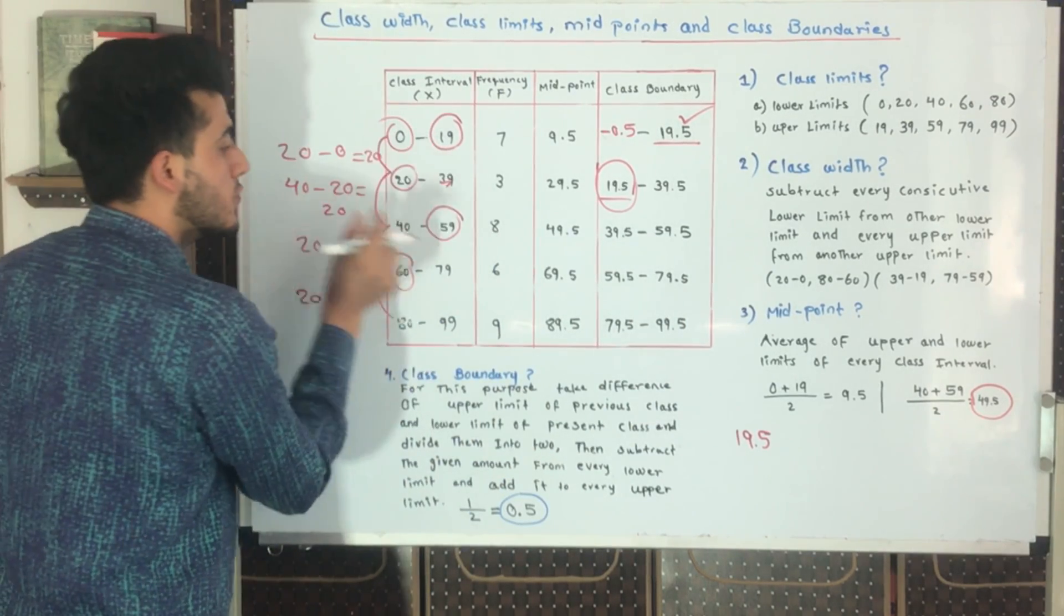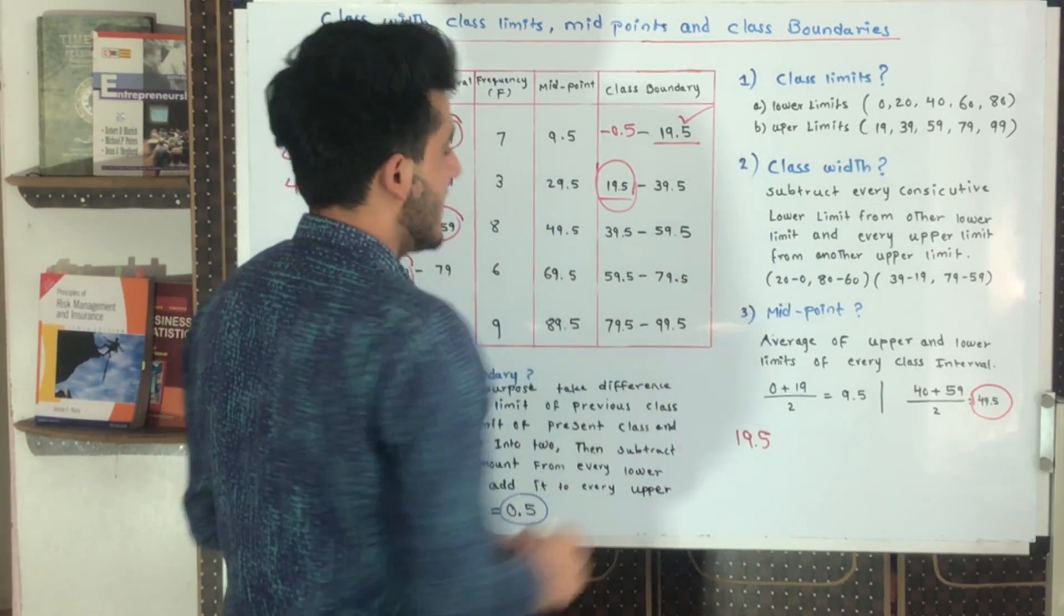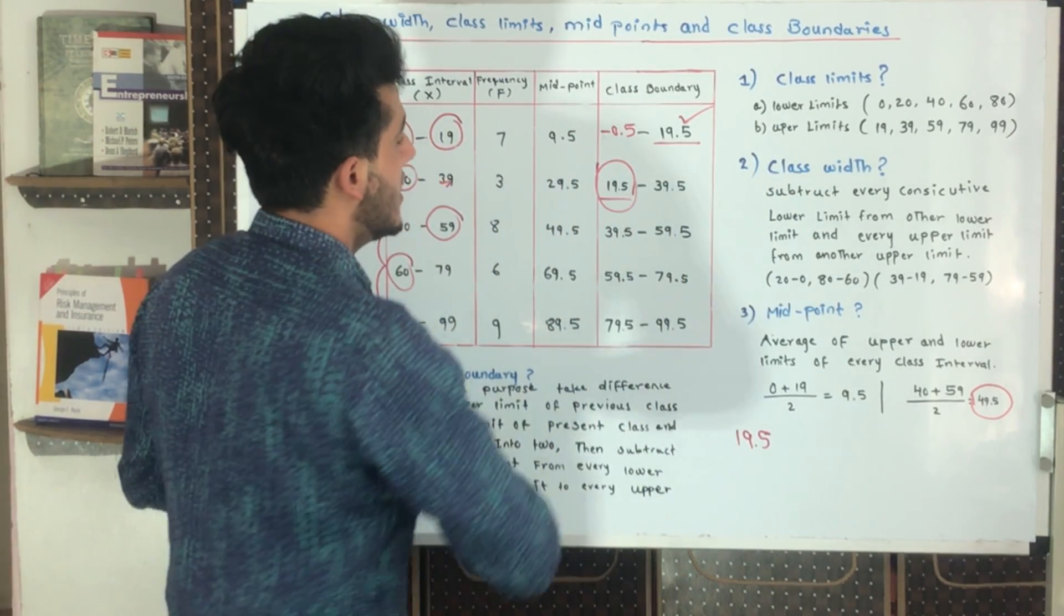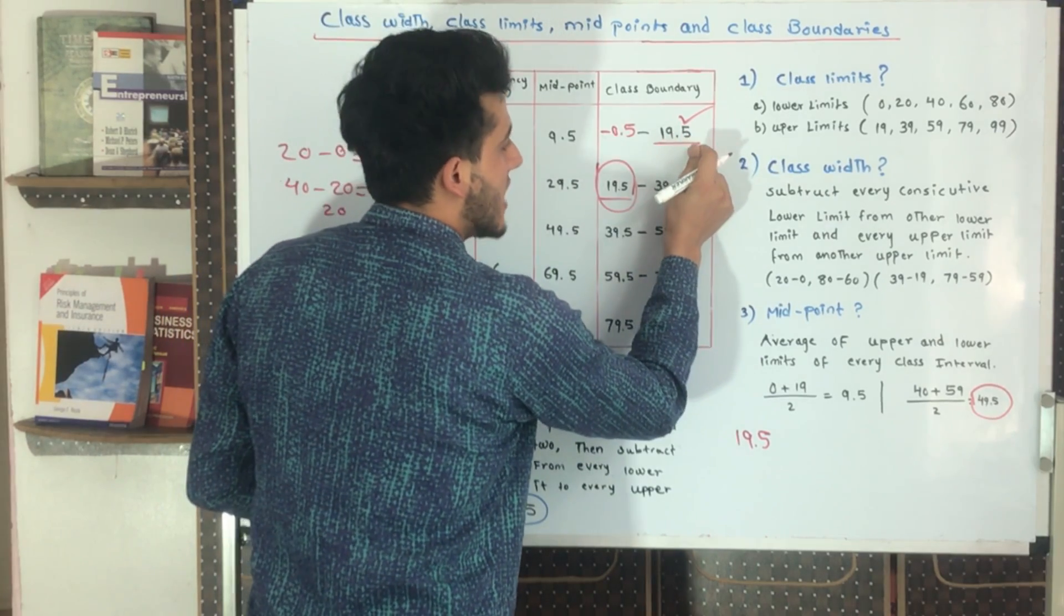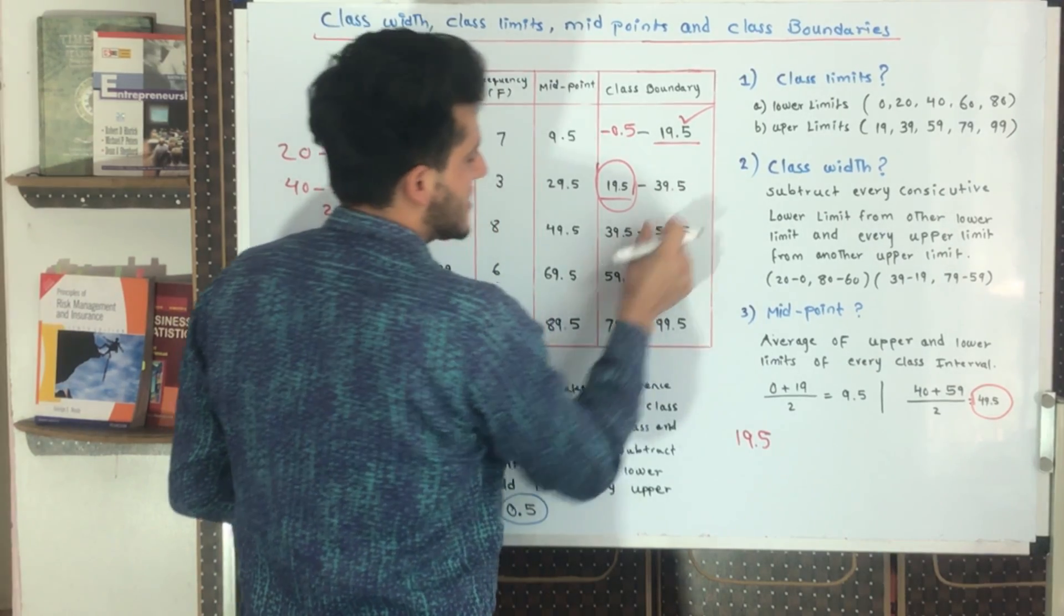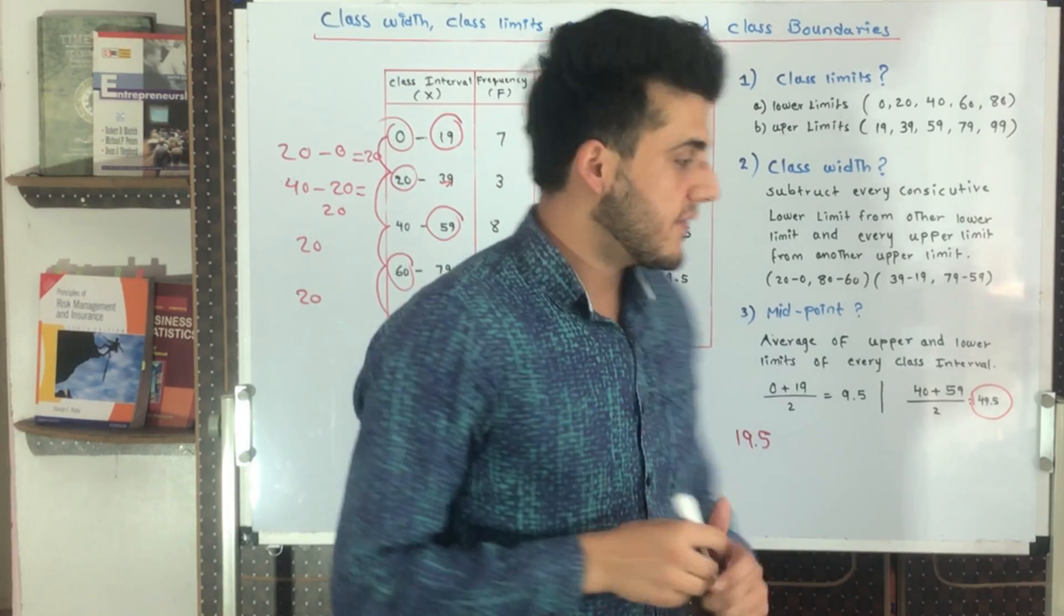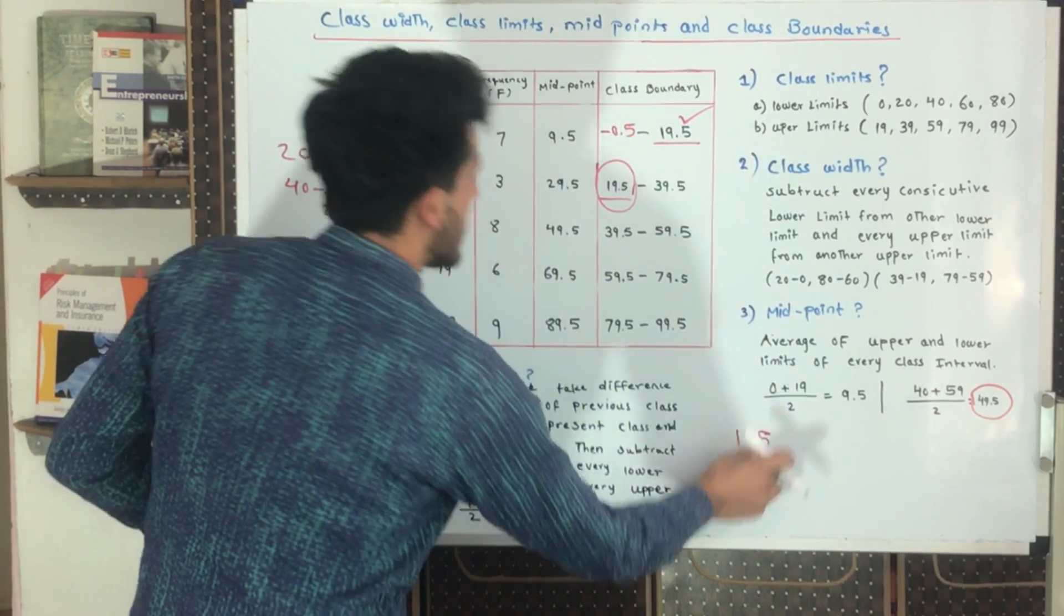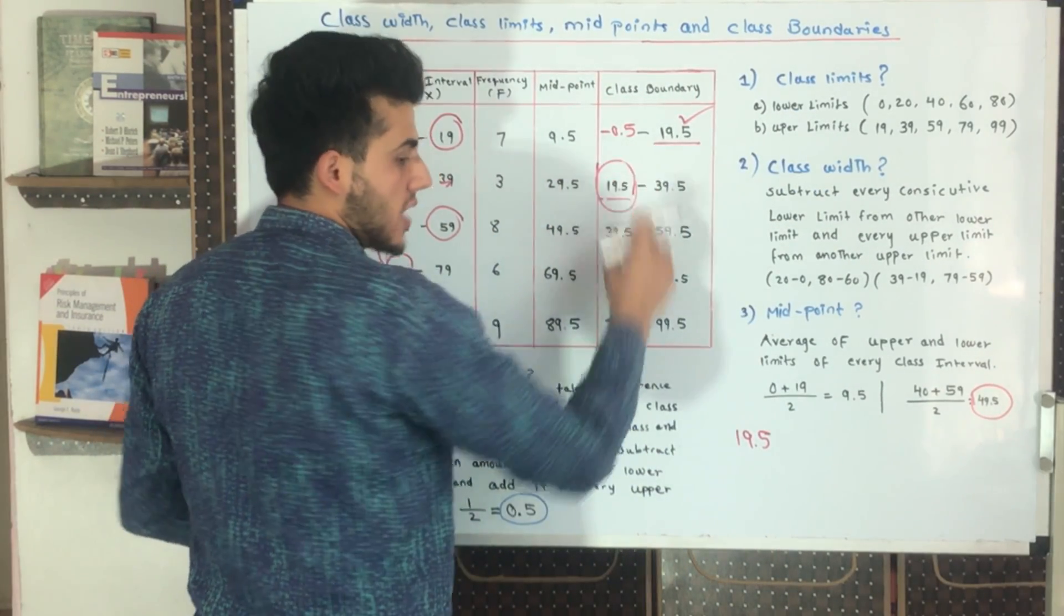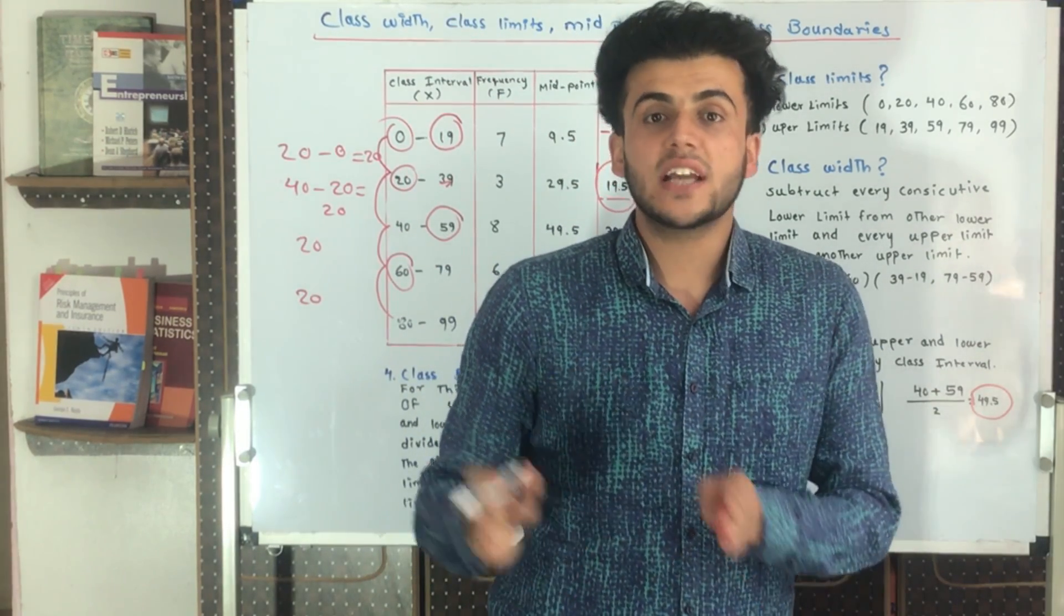What is the result here? Now we can see that this is 19.5 and this is also 19.5, this is 39.5 and this is also 39.5. Now there is no issue here. If 19.5 is coming, we can include it here because now the class interval is very properly identified by us.